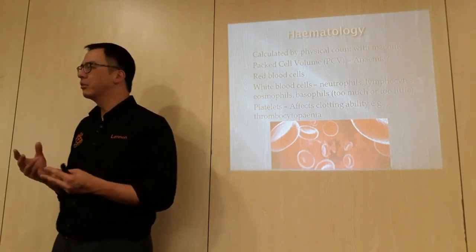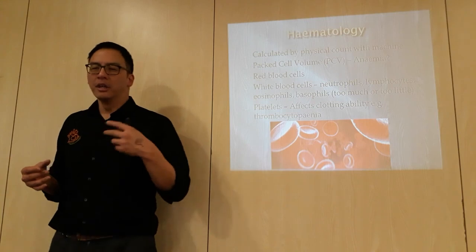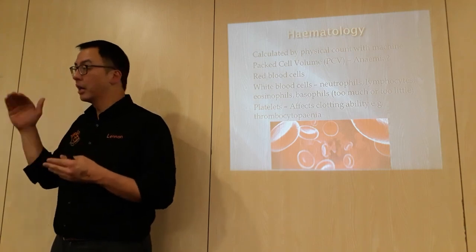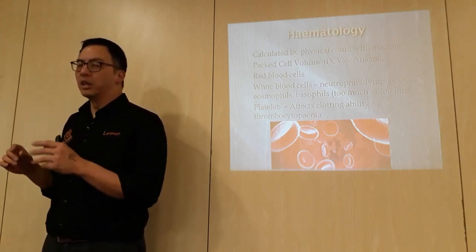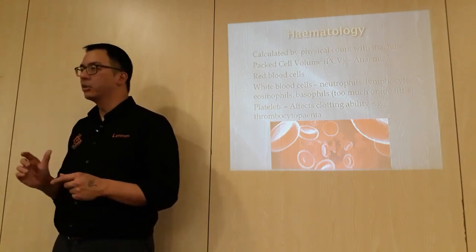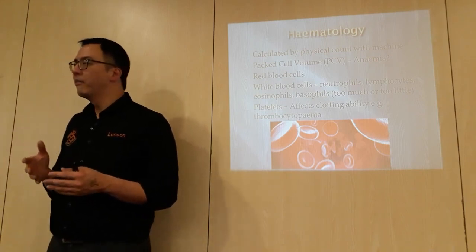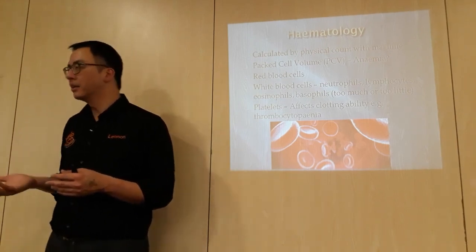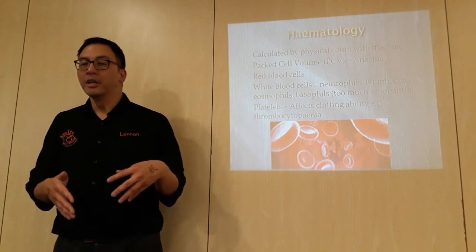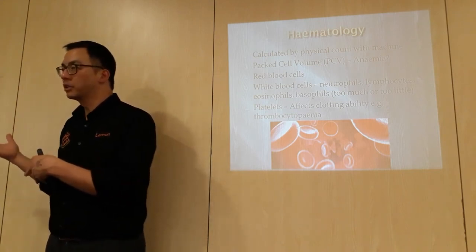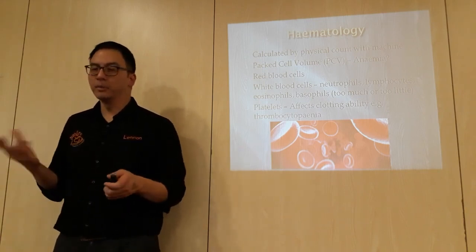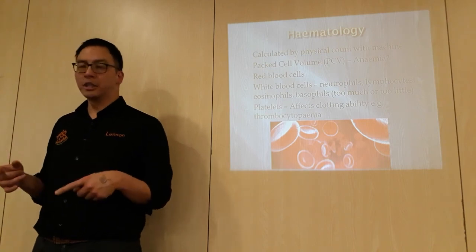Eosinophils are associated with parasitic involvement - for example, lungworm or other parasites cause eosinophils to rise. Basophils relate to fairly specific conditions. The technical terms you'll hear are 'philia' meaning too much - such as neutrophilia or eosinophilia - and 'penia' meaning too little, such as neutropenia or eosinopenia.